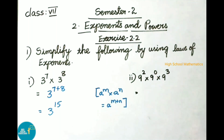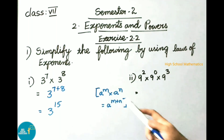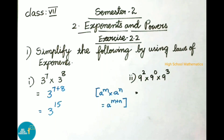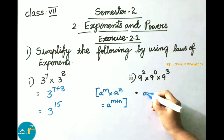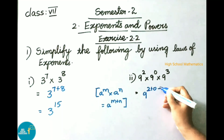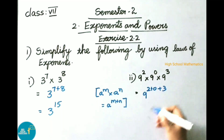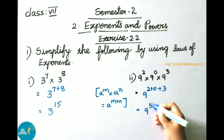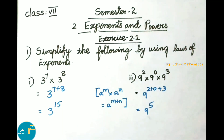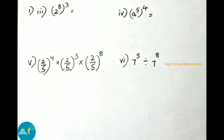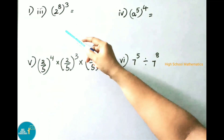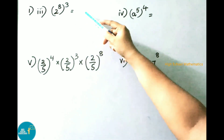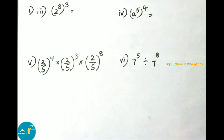Second sum: 9 power 2 into 9 power 0 into 9 power 3. It is looking like the formula a power m into a power n equals to a power m plus n. That is 9 power 2 plus 0 plus 3, which equals 9 power 5.